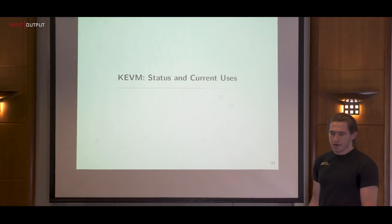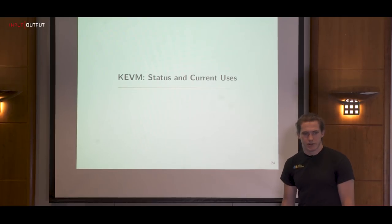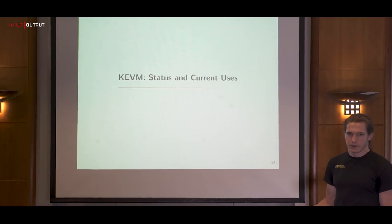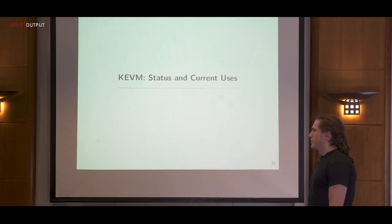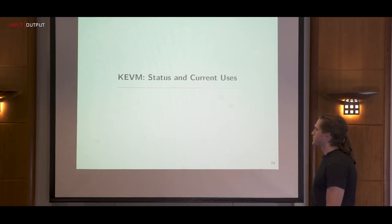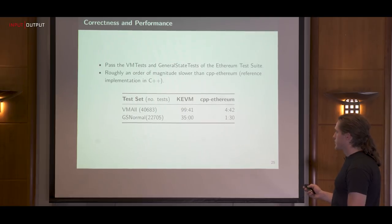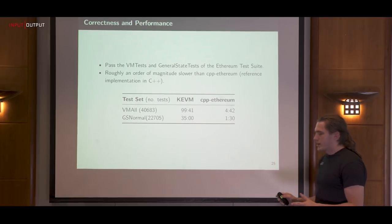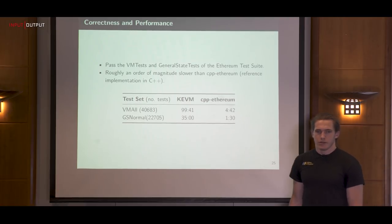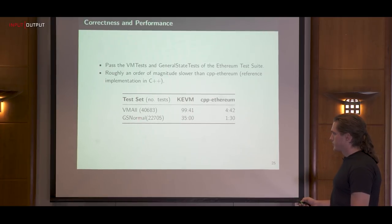Now I'm going to talk about KVM, what it's used for. KVM is the K specification of the EVM. We've specified all the gory details of EVM in K. This is pulled from the paper. We passed the VM test and the general state tests of the official Ethereum test suite. We're about an order of magnitude slower than CPP Ethereum, which is a native implementation. These numbers are kind of old, so that number might have improved by now.